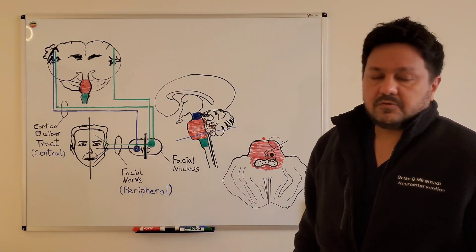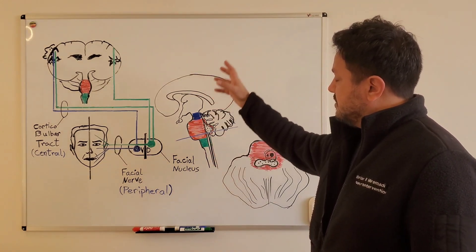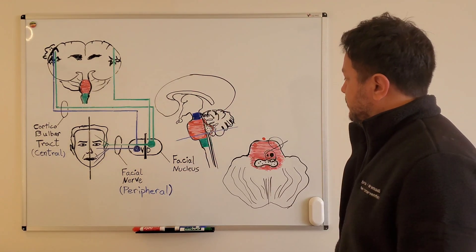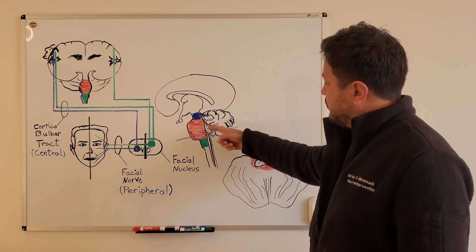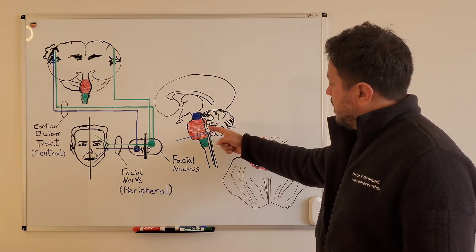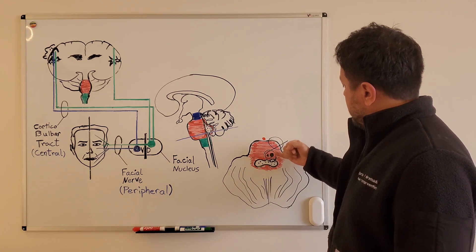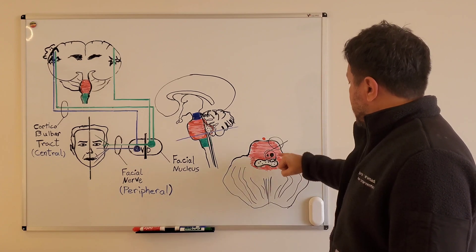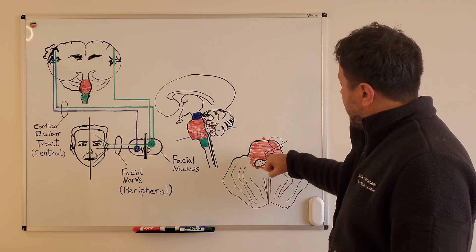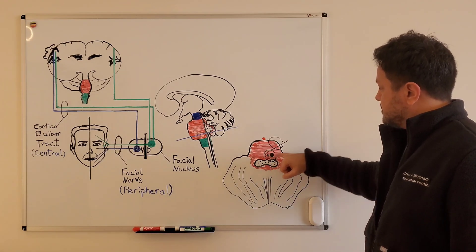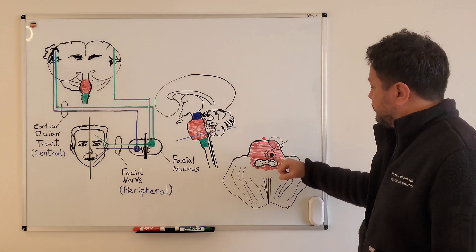To explain that, we can look at the anatomy of the facial nucleus and the pathway of innervation. At the level of the lower pons, in front of the fourth ventricle, we have our facial nucleus. The fibers from it will pass behind the abducens nucleus and form a little bump in front of the fourth ventricle.